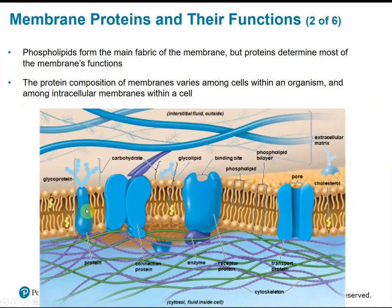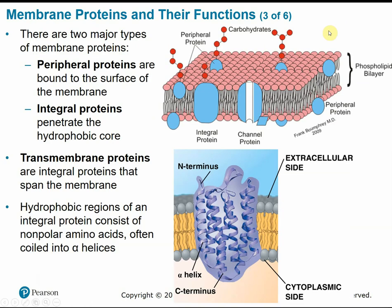The fluid mosaic is composed of phospholipids that comprise the main fabric of the membrane, but the mosaic is made up of different proteins throughout. The proteins are what really determine most of the membrane's function in allowing things in or out of the cell, communicating with other cells, and attaching to other cells. The type of proteins in a cell membrane can vary among different cells — between muscle cells, nerve cells, and skin cells — and among different species. Of the membrane proteins, there are two main categories: peripheral proteins, which are mainly attached on the periphery or surface of the membrane and don't go all the way through.